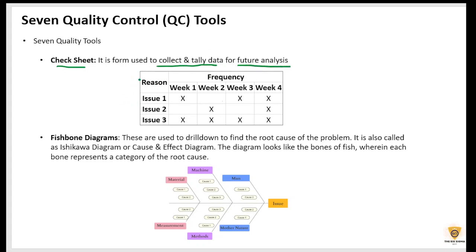For example, this is issue 1, issue 2, issue 3. And we have to know what was the frequency in week 1, week 2, week 3, week 4.